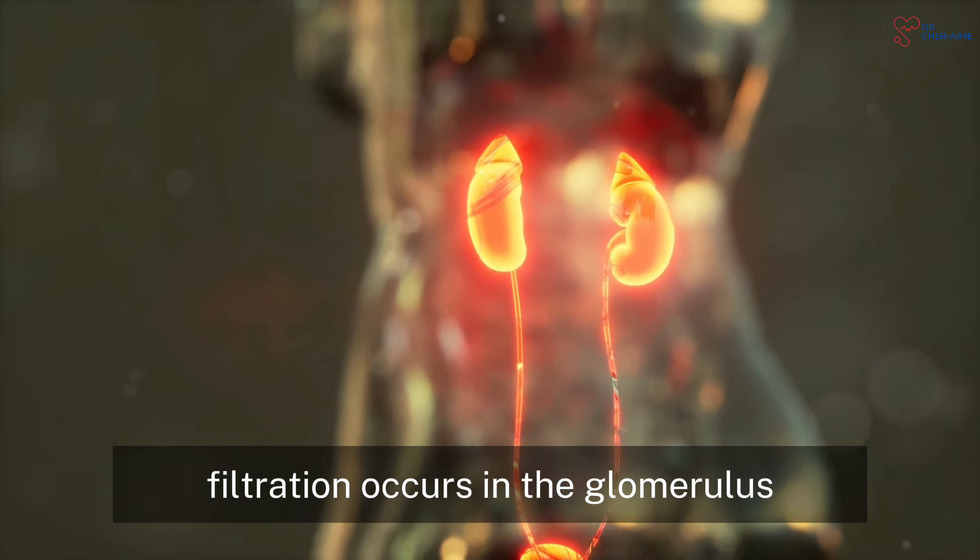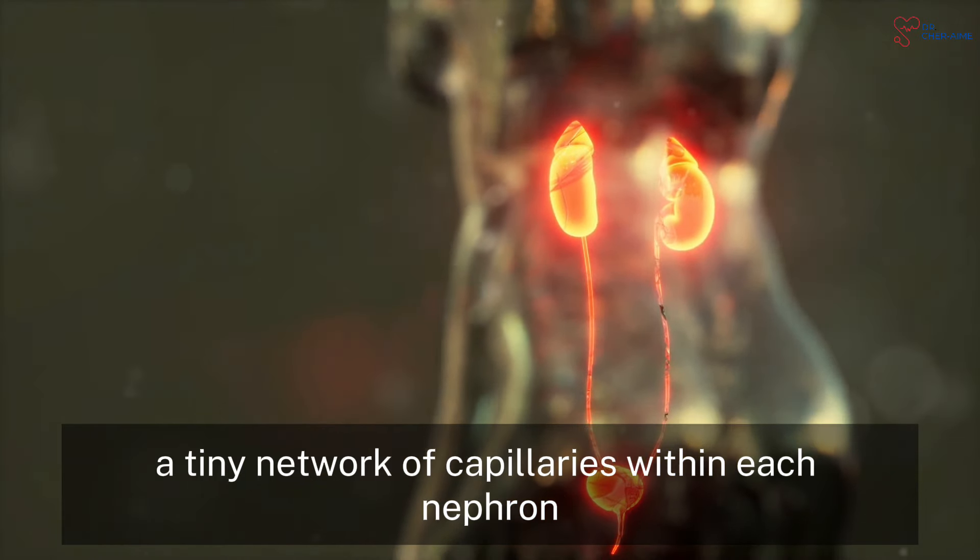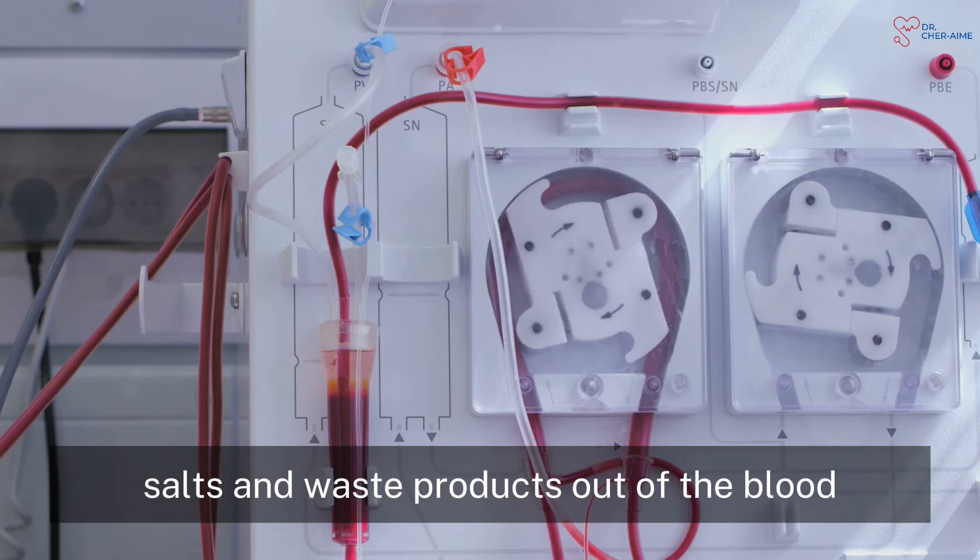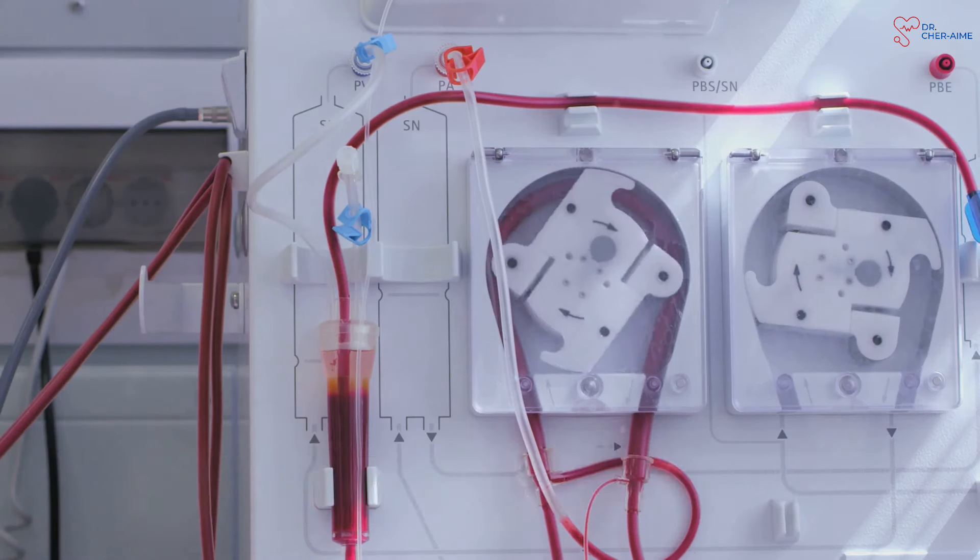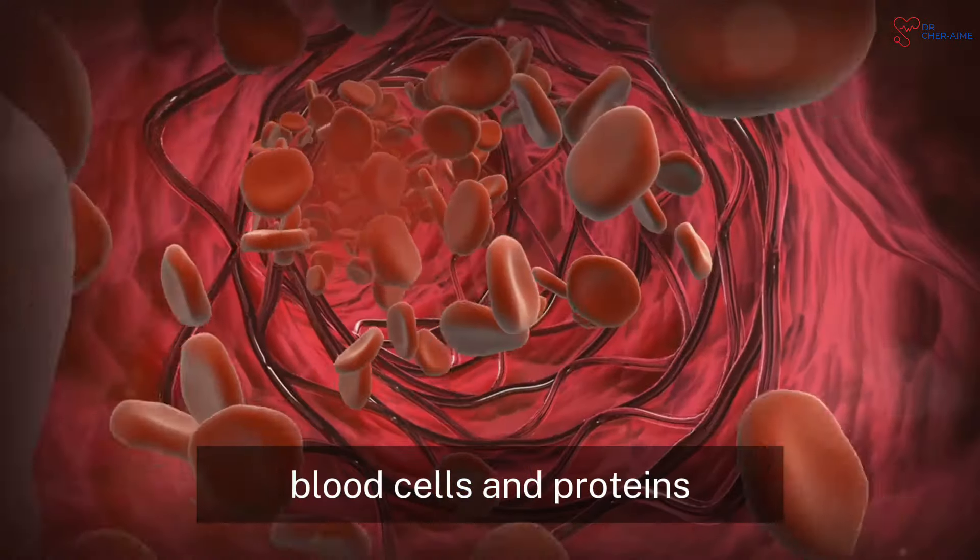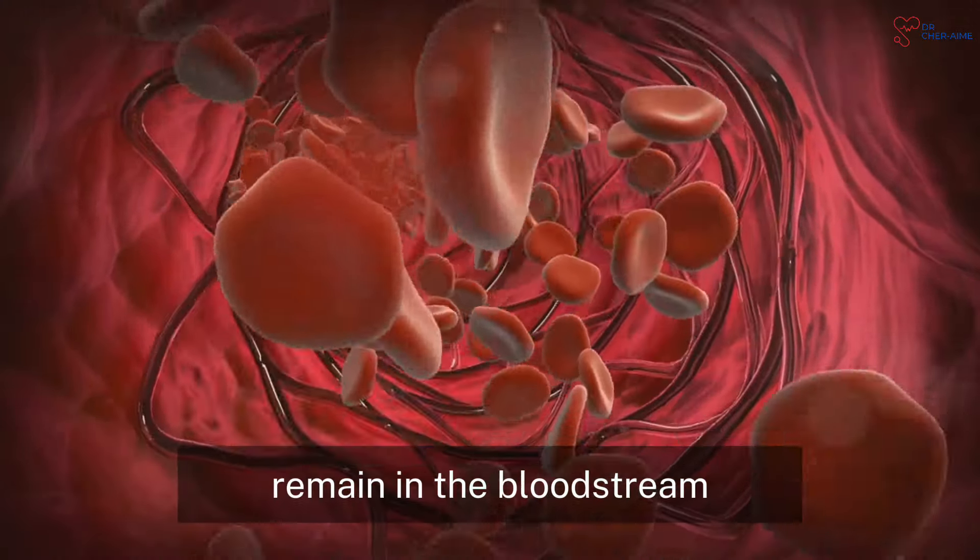Filtration occurs in the glomerulus, a tiny network of capillaries within each nephron. Here, blood pressure forces water, salts and waste products out of the blood and into the glomerular capsule. This filtered fluid is called filtrate. Blood cells and proteins, which are too large to pass through the glomerulus, remain in the bloodstream.